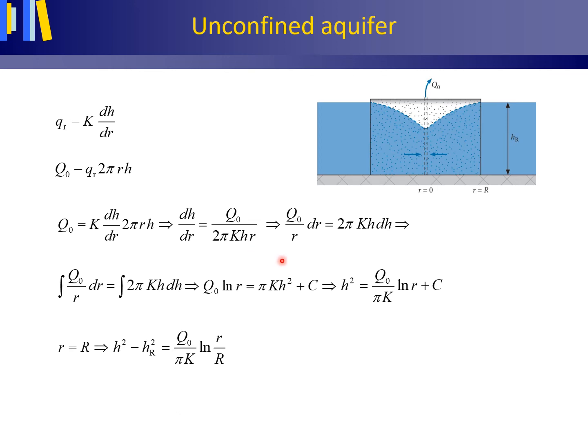We move all terms with r to the left and all terms with H to the right. We integrate and we find this equation. Then again, we insert the boundary condition small r equals large R to obtain this equation.